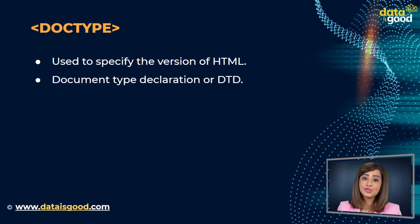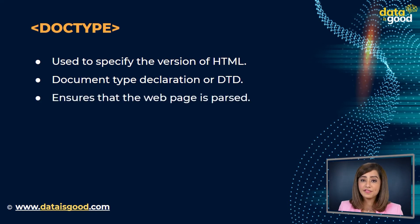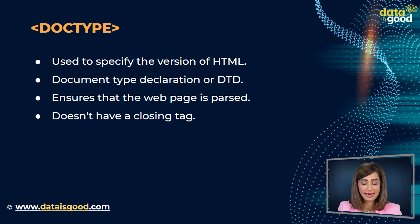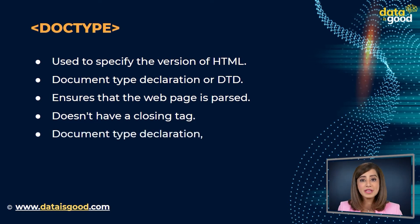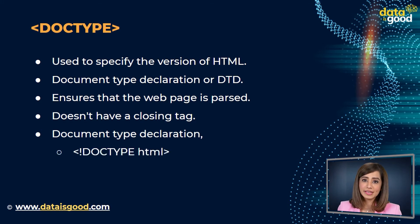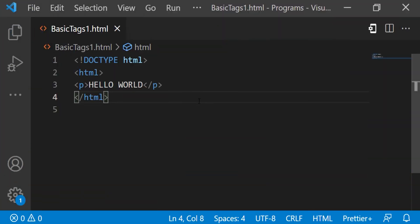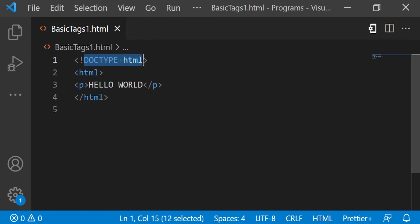The DOCTYPE declaration is an instruction to the web browser about what version of HTML the page is written in. It ensures that the web page is parsed the same way by different web browsers. DOCTYPE doesn't have a closing tag. Before starting any HTML document we must always start with the document type declaration: <!DOCTYPE html>. In modern browsers that support HTML5 — almost 95% of all browsers today — this simple DOCTYPE with HTML as the attribute will work.